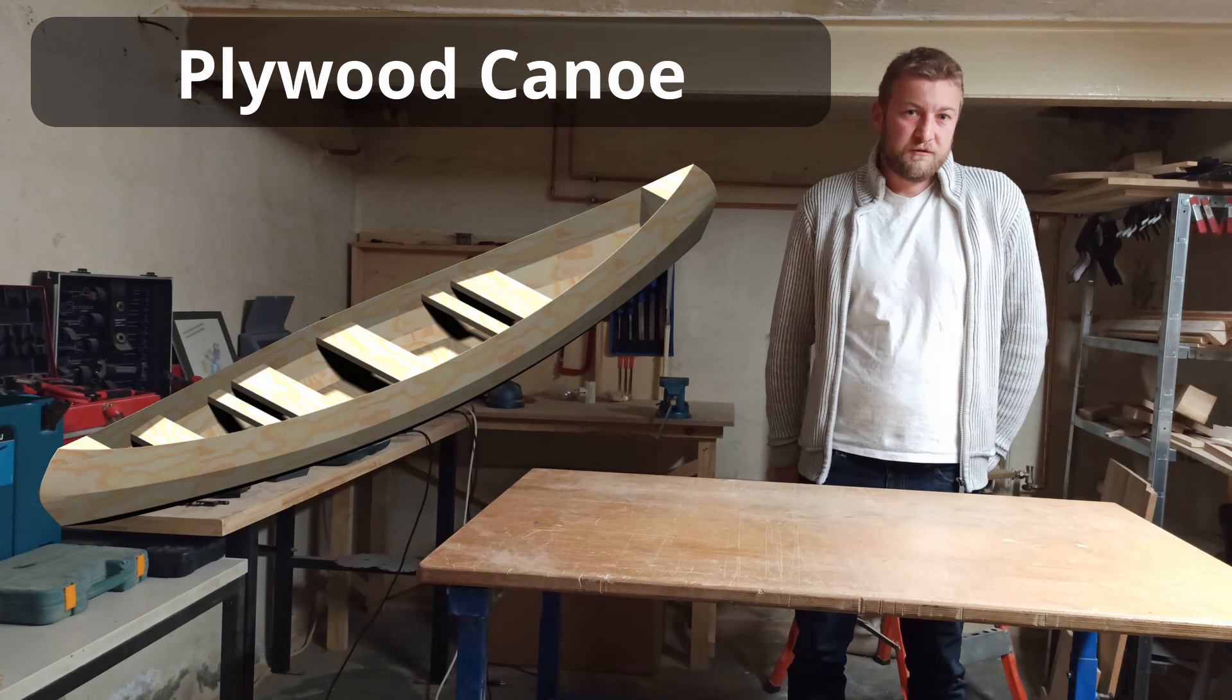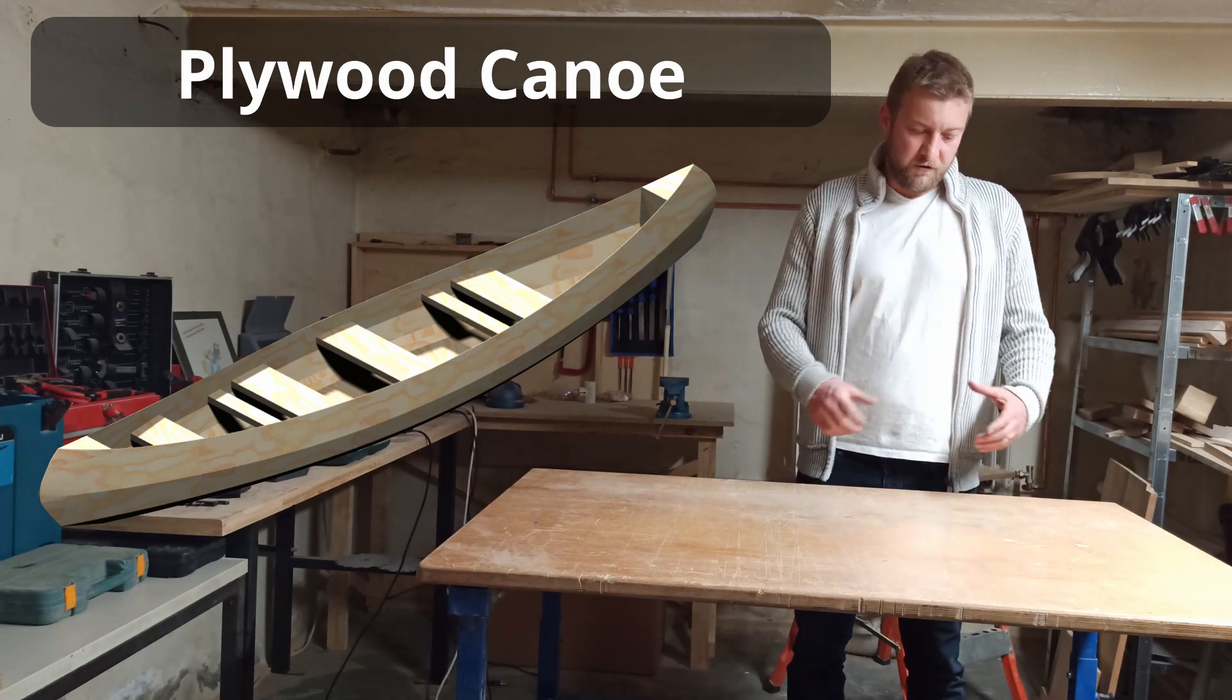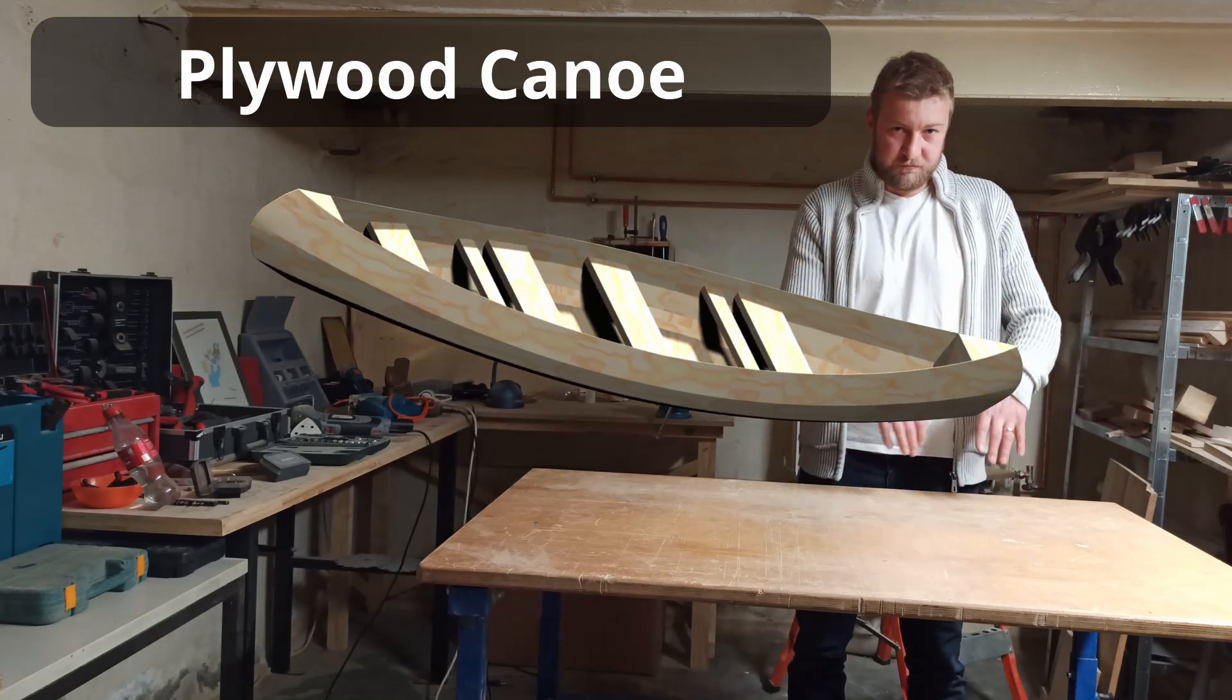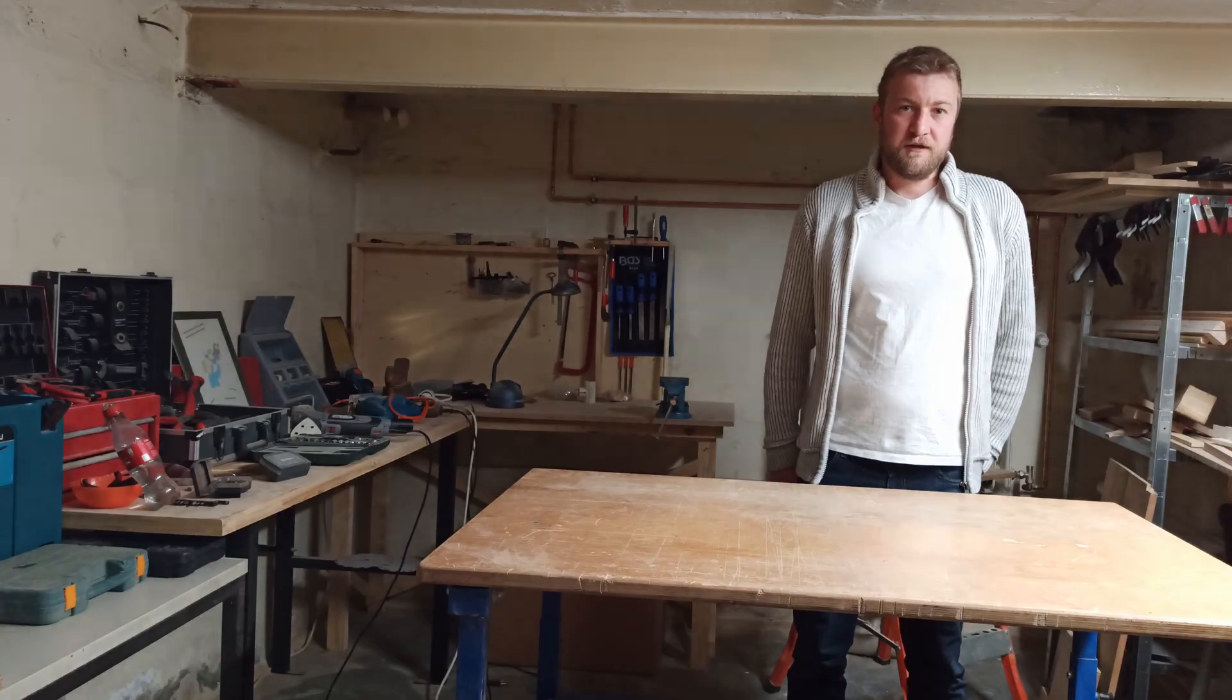The fourth way that I found is the so-called plywood canoe which basically consists of planks of plywood that are connected via the stitch and glue technique. I chose a plywood design because it's the fastest way to build a canoe and also it looks quite robust to me.